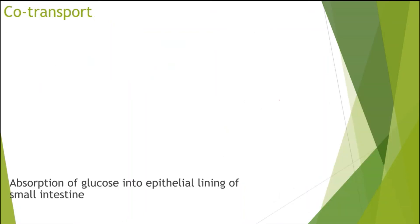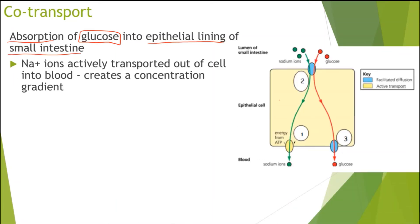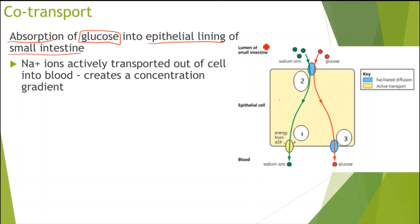Now, co-transport — this is new from GCSE. You need to be aware of the example of the absorption of glucose into the epithelial lining of the small intestine. We have the lumen of the small intestine, the epithelial cell, and the blood. We have glucose in the lumen of the small intestine, and we want to get it into the blood — so how do we do that?